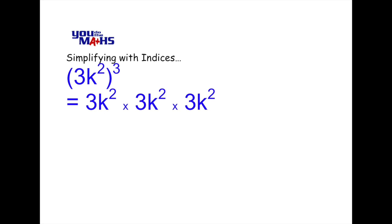So when you have a bracket raised to a power like in this case, everything in the bracket is multiplied out the number of times the index tells you. Now we can expand that further. 3 multiplied by itself three times is three times three times three. k squared is k times k and we have to repeat that three times as well.